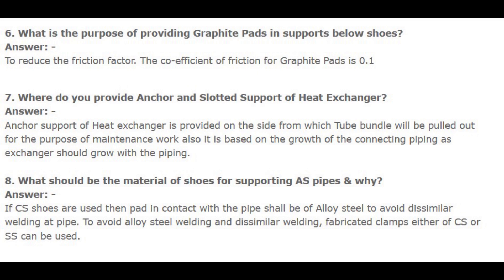Number 7. Where do you provide anchor and slotted support of a heat exchanger? Answer: Anchor support of a heat exchanger is provided on the side from which the tube bundle will be pulled out for the purpose of maintenance work. Also, it is based on the growth of the connecting piping, as the exchanger should grow with the piping.